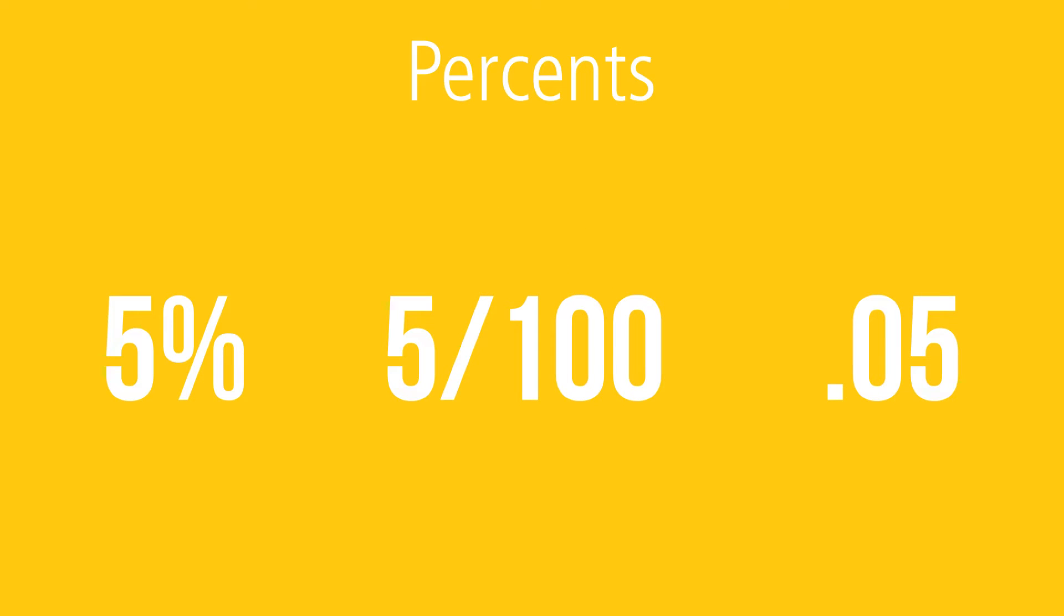Percents are numbers equal to a fraction with a denominator of one hundred. Five percent, for example, means five parts out of 100, which may be written in these following ways.